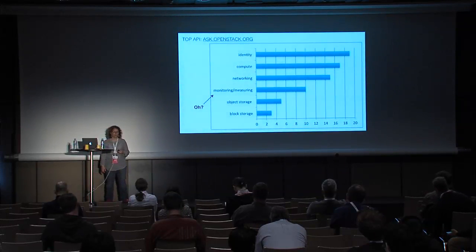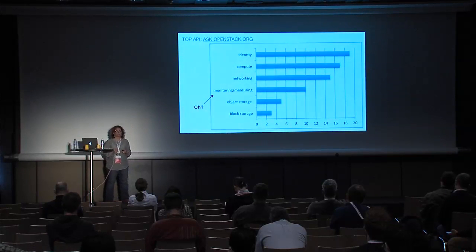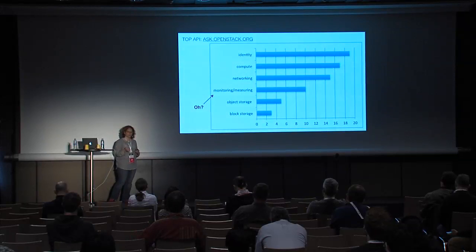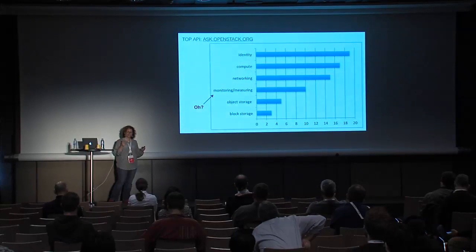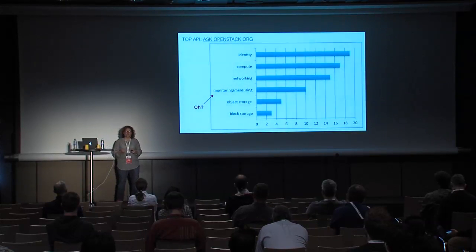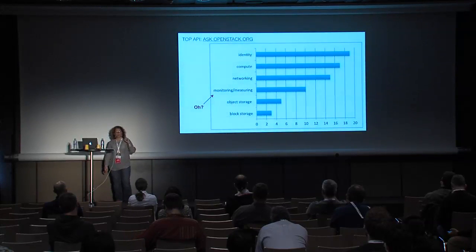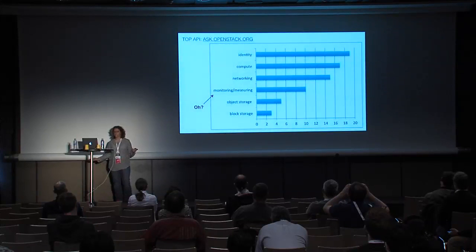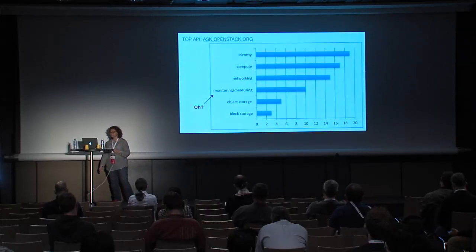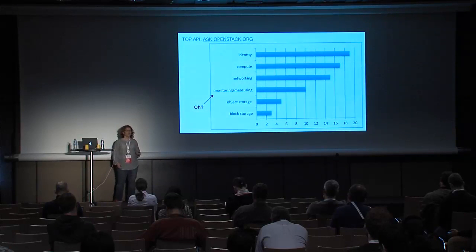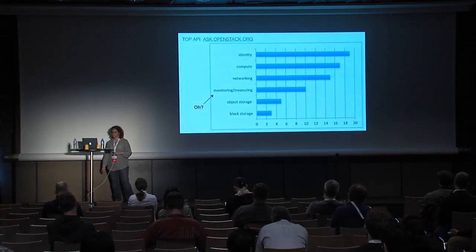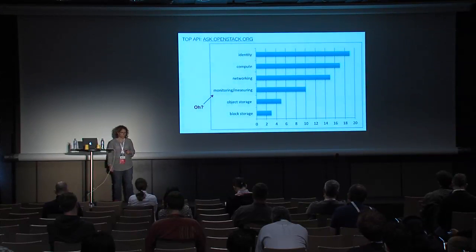The ones that have 'API' in the question or answer set is interesting. Identity is going to be the source of most of your questions, because it is the gatekeeper — the first thing you do. I read a paper that said Keystone is Cookie Monster. It is the way that you have to talk to any of the APIs. Identity is going to have the most questions. Next is compute followed by networking. Here's the one that surprised me — why isn't storage somewhere in the top three? Measuring and metering is in the top four. I think ask.openstack.org is a logical place for people to ask questions about Ceilometer and its API — how do I set alarms, how do I trigger alarms. It's fairly new, so again I was a little bit surprised.